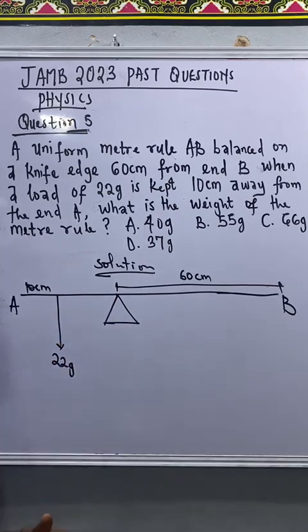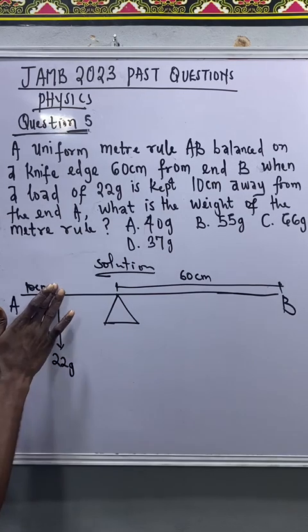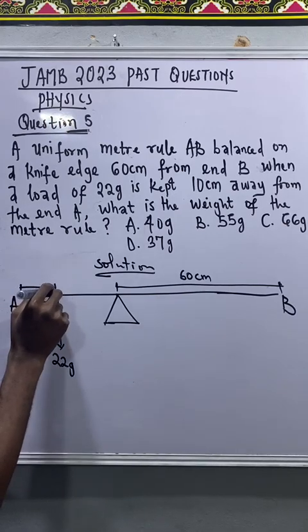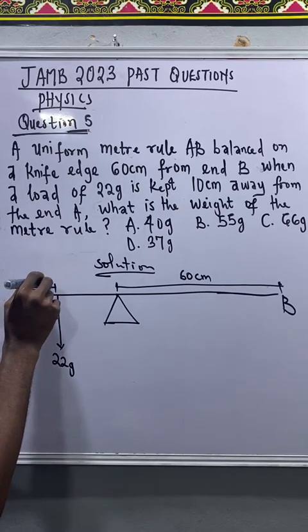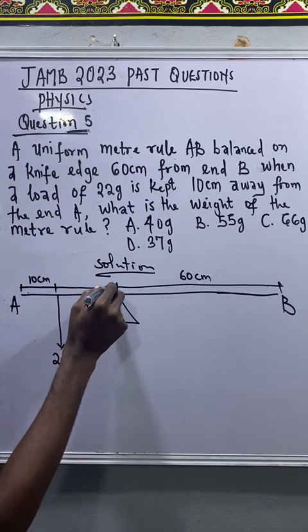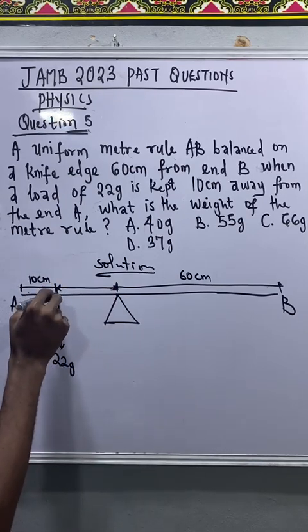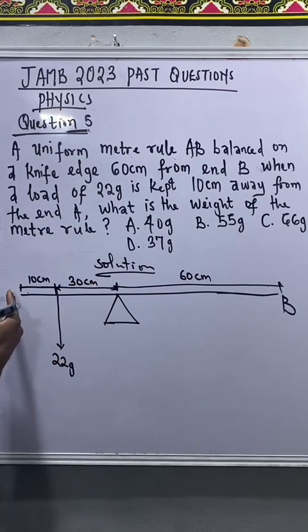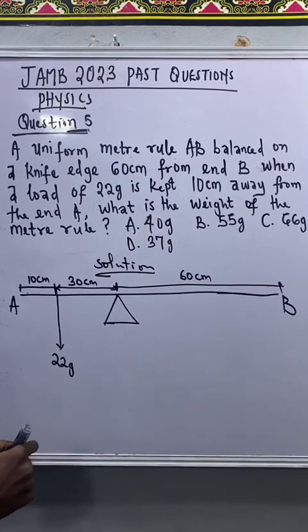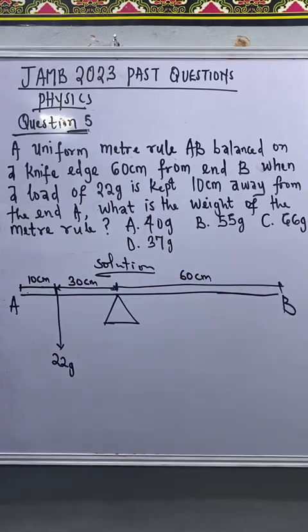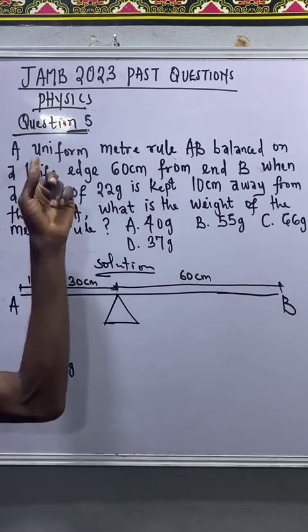From here to here, let's say that's 10 centimeter. That means the remaining distance from here to here will be 30 centimeter, because everything from here to here must be 40, because 40 plus 60 will give us 100.